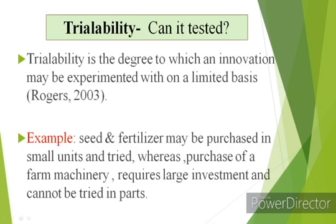The fourth attribute is trialability — can it be tested? According to Rogers, trialability is the degree to which an innovation may be experimented with on a limited basis. For example, seeds and fertilizer may be purchased by farmers in small units and tried on a limited farm area to get results of that particular innovation before fully adopting it.